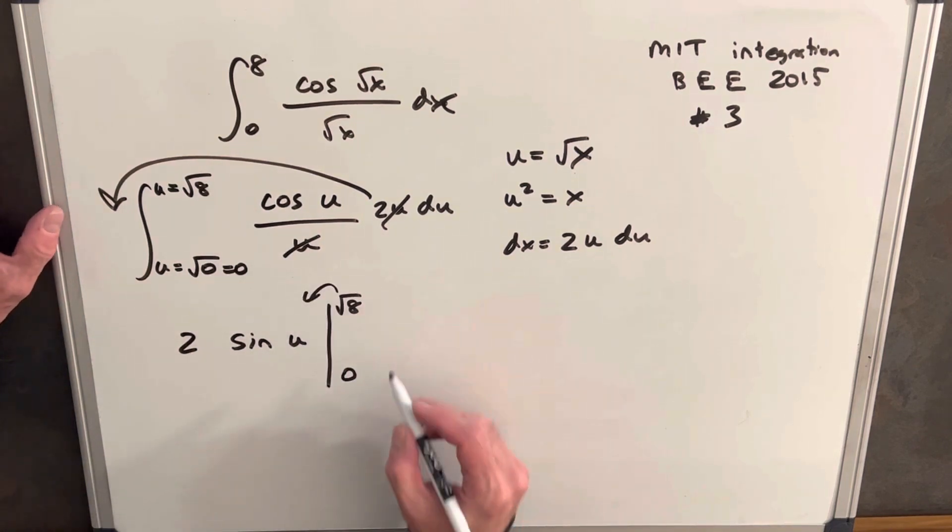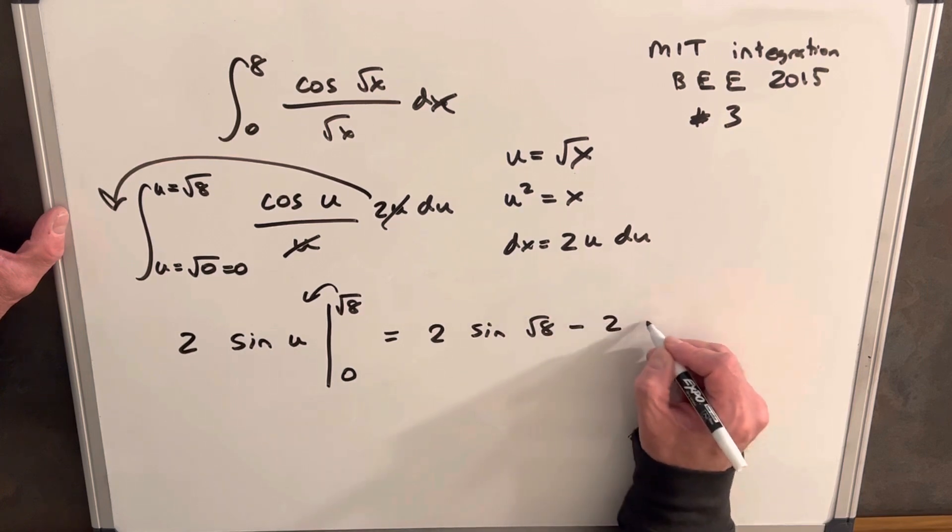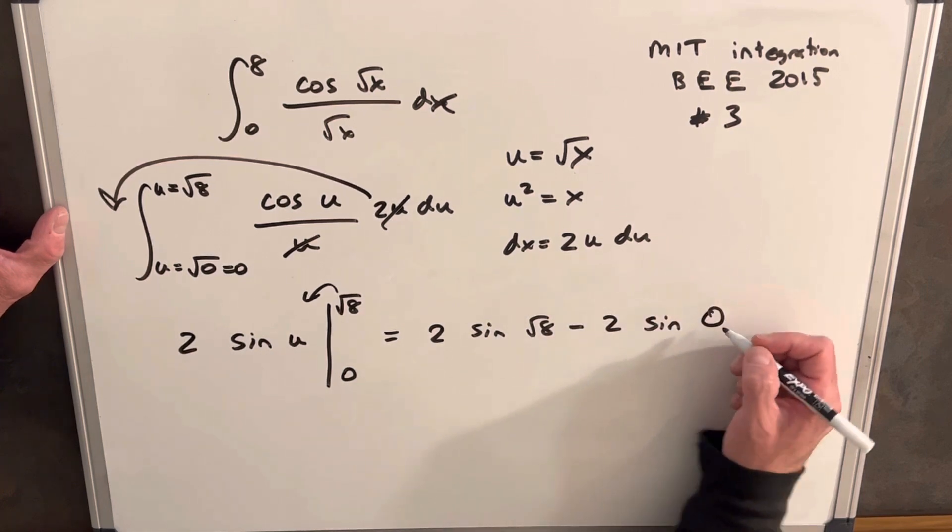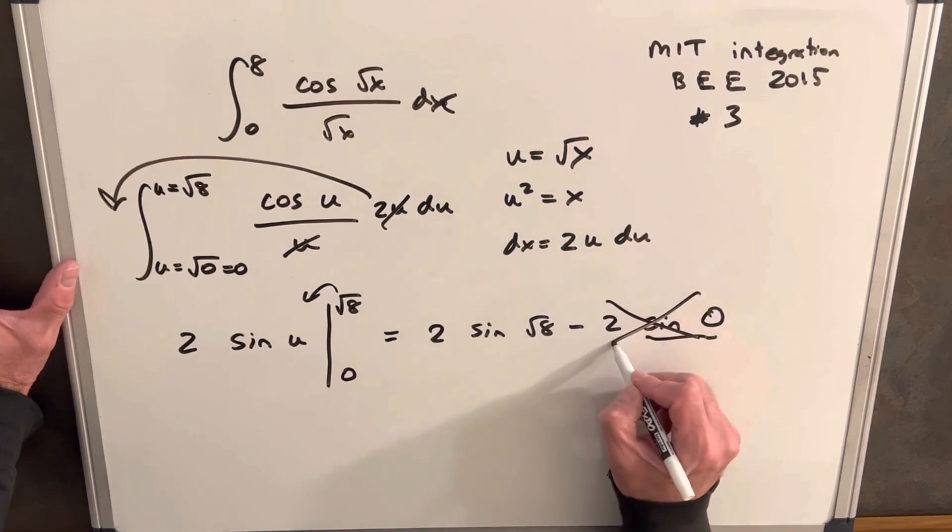So then plugging these values in, we're going to have 2 sine square root of 8 minus 2 sine of 0. But the nice thing is sine at 0 is just 0, so this piece cancels out.